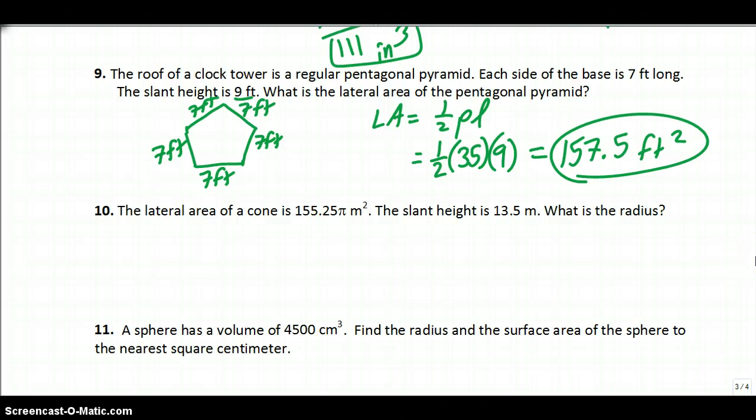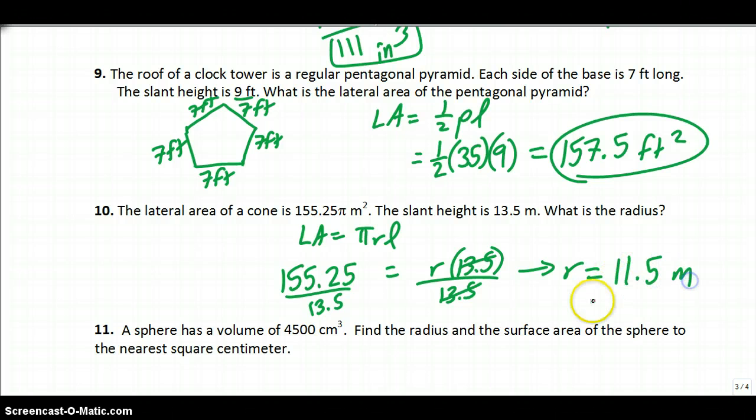Lateral area of a cone is 155.25 pi square meters. The slant height is 13.5. What's the radius? Well, if I remember lateral area of a cone, which is on your sheet, you have pi RL. So I replace lateral area with 155.25 pi equals pi times, I don't know what the radius is, but the slant height is 13.5. You'll notice pi is on both sides, so you can divide by pi. Cancels that out. I would go ahead and divide by 13.5. When you do, you get the radius. 155.25 divided by 13.5, you get a radius of 11.5 meters. It's really just a matter of here's the formula, here's what you know. Solve for what you don't know.